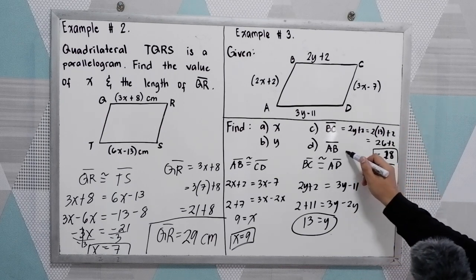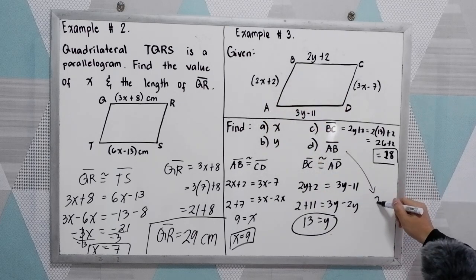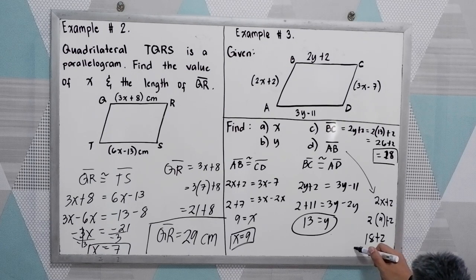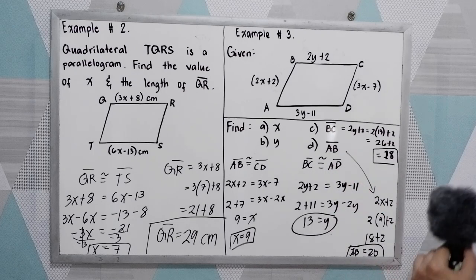While AB, AB is 2x plus 2. So 2 times, our x is 9, plus 2. So 18 plus 2, 20 units. So the value of segment AB is 20 units.